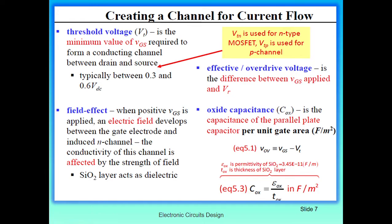The effective overdrive voltage Vov is the difference between the applied VGS and VT — that is, Vov = VGS minus VT. The oxide capacitance COx is the capacitance of a parallel plate capacitor per unit gate area, given by COx = epsilon_ox divided by t_ox. This was the mechanism of operation of MOSFET and how we can create the channel for current flow between the drain and source terminals. Thank you very much. See you next time.